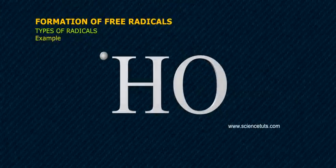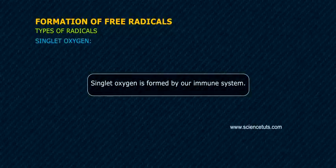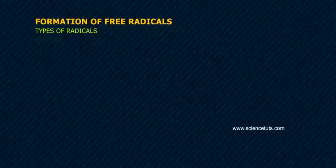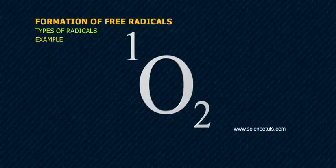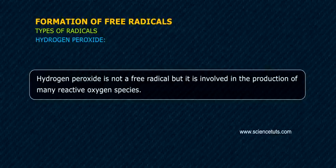Example: HO•. Singlet oxygen is formed by our immune system. Example: O2. Hydrogen peroxide is not a free radical but is involved in the production of many reactive oxygen species.